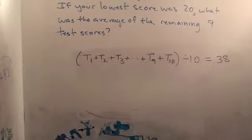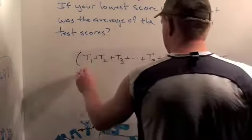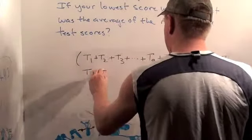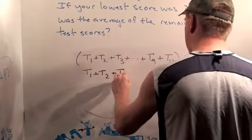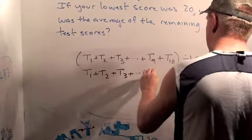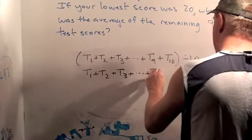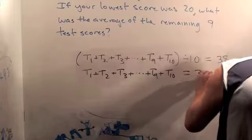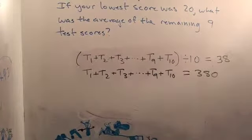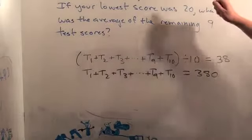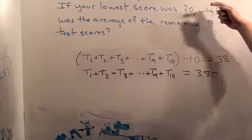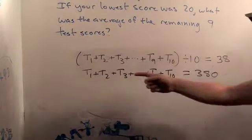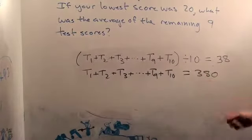The sum of test one, test two, test three, test four... test one plus test two plus test three plus test nine plus test ten — those scores add up to three hundred and eighty. So that's what it means when the problem says you took ten Mathlete tests and the average score was thirty-eight. The test scores add up to three hundred and eighty.